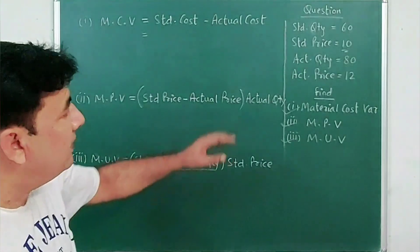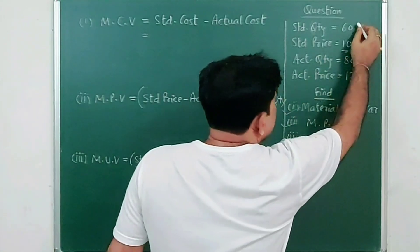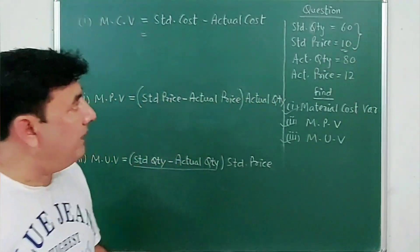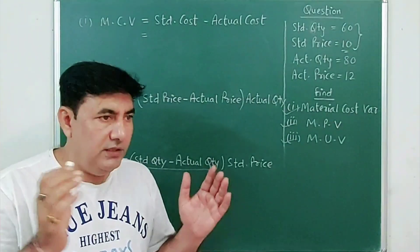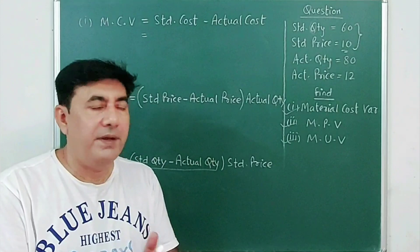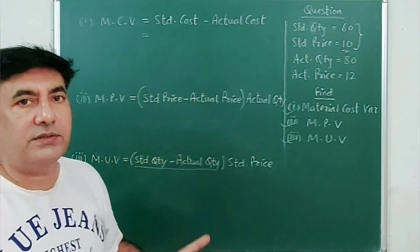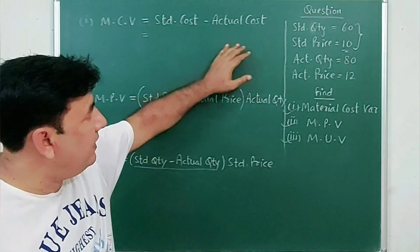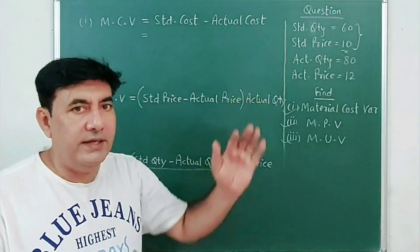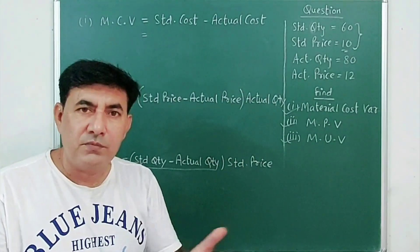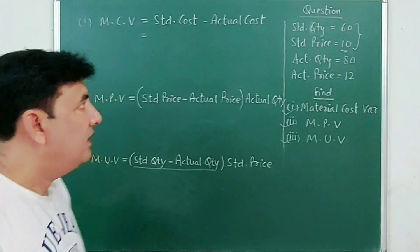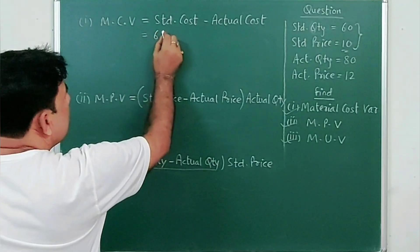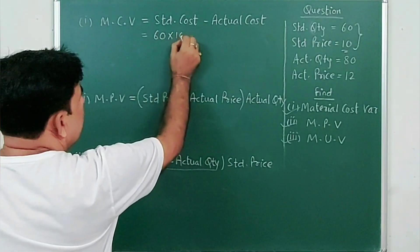To find standard cost, multiply standard quantity by standard price. Actual cost will be actual quantity into actual price. So standard cost is 60 into 10.